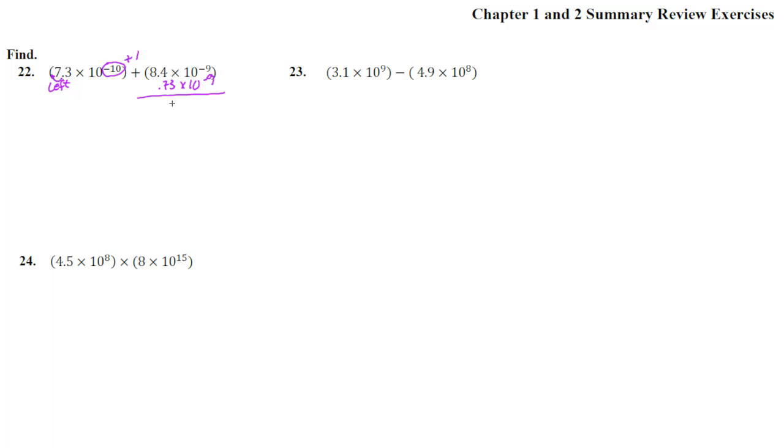Now let's do it. 0 plus 3 is 3. 4 plus 7 is 11. Carry the 1. 1 plus 8 is 9. Decimal comes straight down. 1 times 10 to the negative 9. And really, all that 10 to the negative 9 meant was that the decimal is really 9 places way over here. So all those zeros would have just been 0.000084 and 0.0000 with a 7.3 and lined up like that.